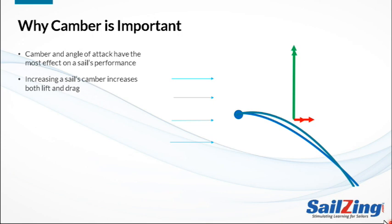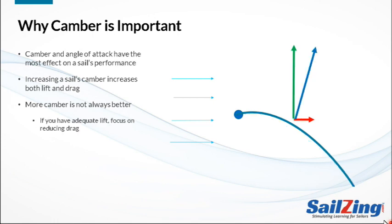For more on why this occurs, see our video on lift and drag. More camber means more lift, but more camber is not always better. Just like we saw in the angle of attack video, it's the combination of lift and drag that matters. Let's take a minute to see how this plays out. Imagine you are sailing upwind and you have plenty of power or lift to keep the boat moving fast. Assume your sail is relatively full with lots of camber. Let's use this drawing to represent the situation.